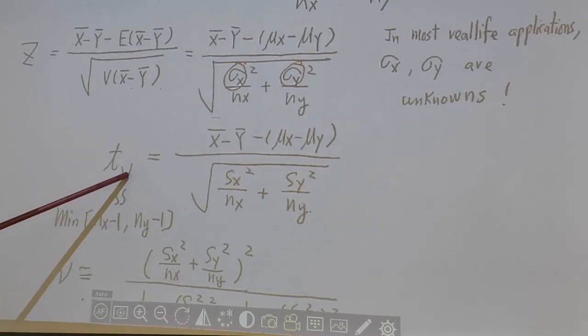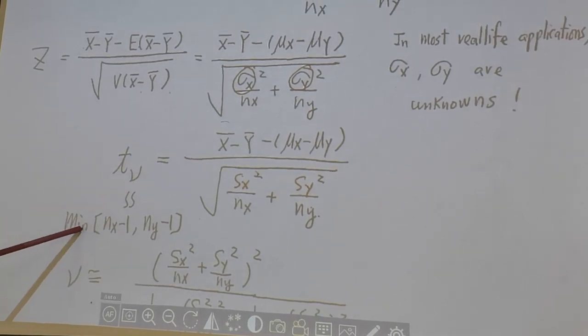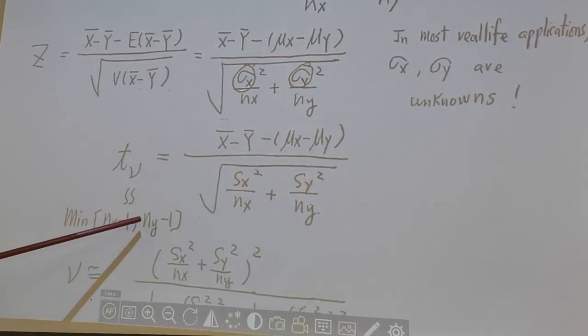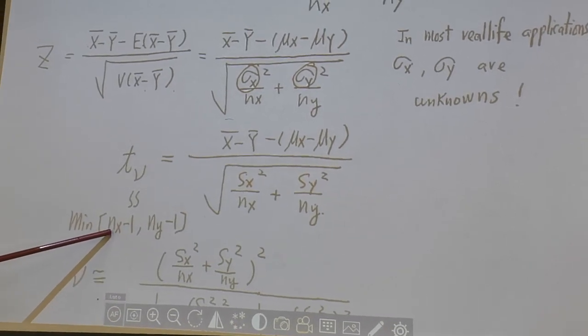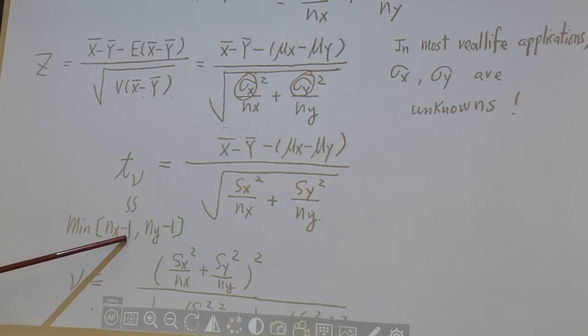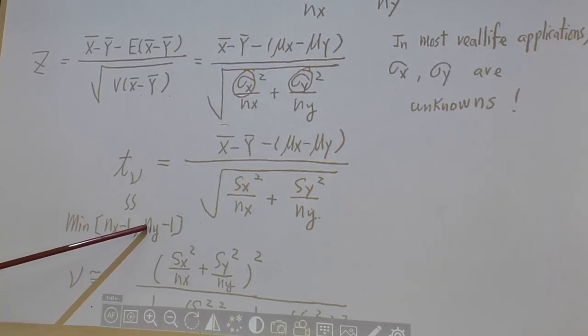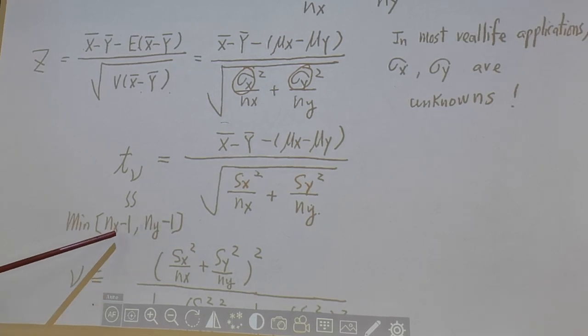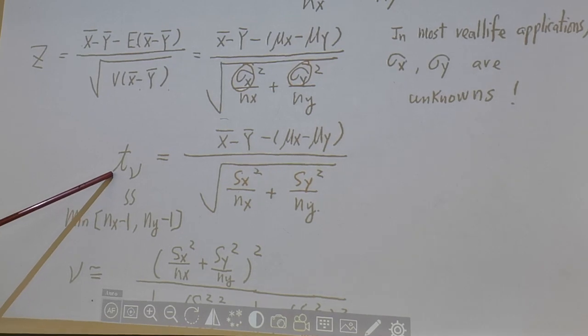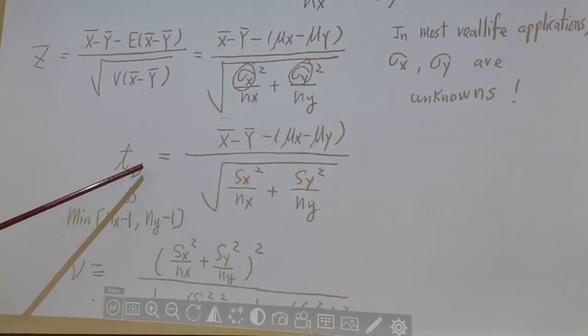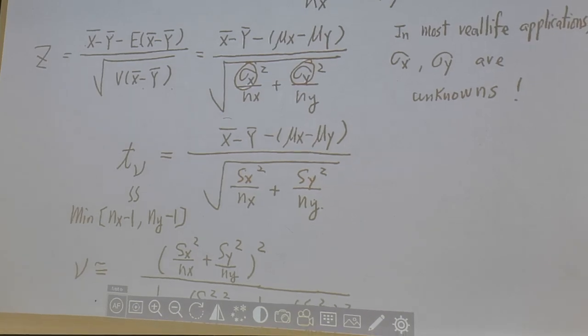t with new degree of freedom. First approximation is easier. You can just use minimum of nx minus 1 and ny minus 1. In our example, the treatment group, the size is 21, 21 minus 1 is 20. The control group, size is 23, 23 minus 1 is 22. So 20, 22, which one is smaller? 20 is smaller. So in our example, we're going to use t with 20 degrees of freedom.